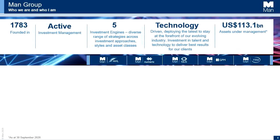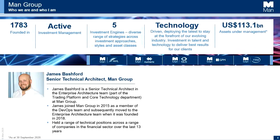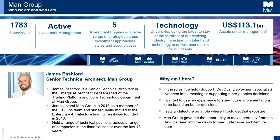My name is James Bashford, I'm a senior technical architect at Man Group. I joined Man in 2015 as a DevOps engineer, and when the architecture team was founded in 2018 I was able to move across to that team. Previously I'd held a range of technical positions across the energy and financial sectors. I decided to move to architecture because I was often supporting or implementing changes planned by others, and I wanted to use my experience to help better plan changes and bring about more sensible technology decisions.